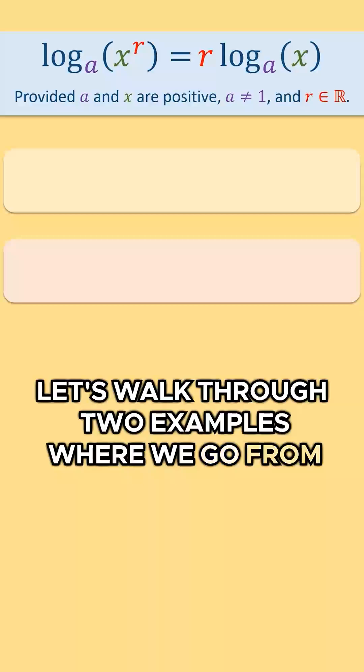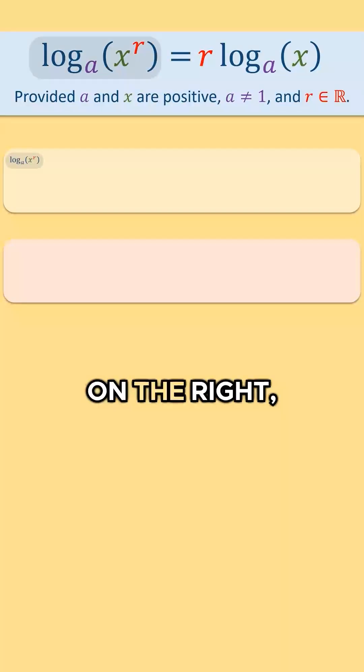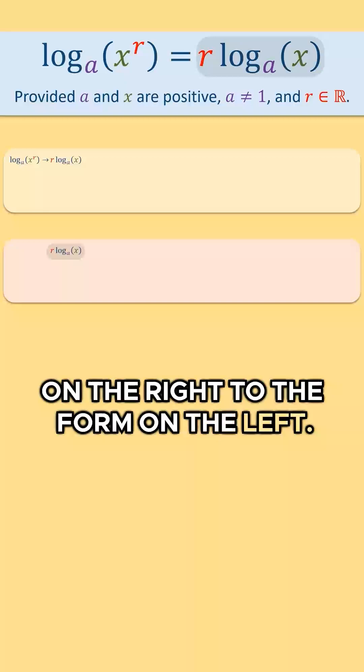Let's walk through two examples where we go from the form on the left to the form on the right, and one where we go from the form on the right to the form on the left.